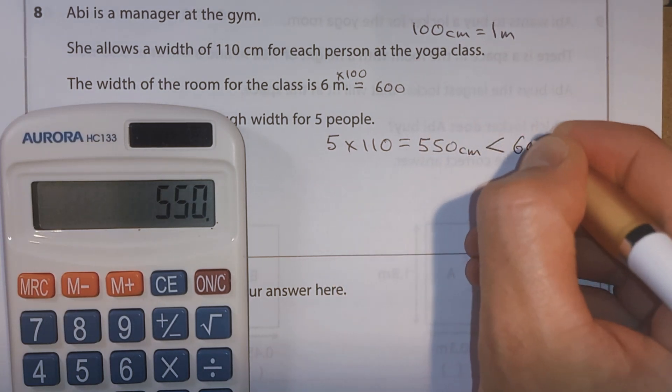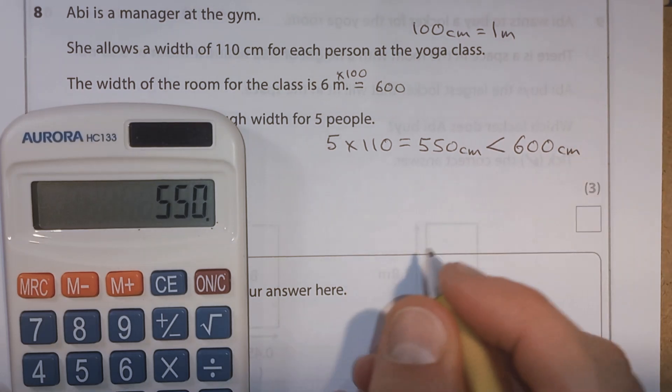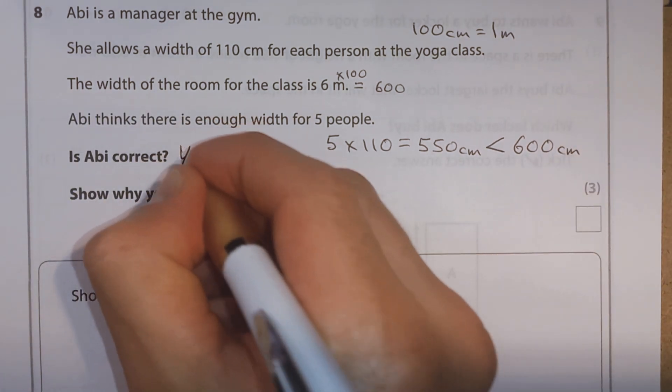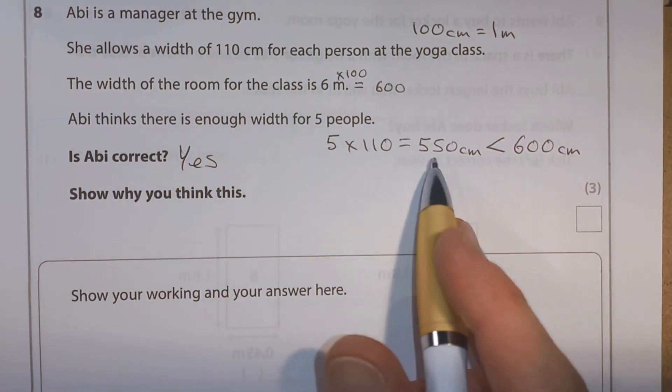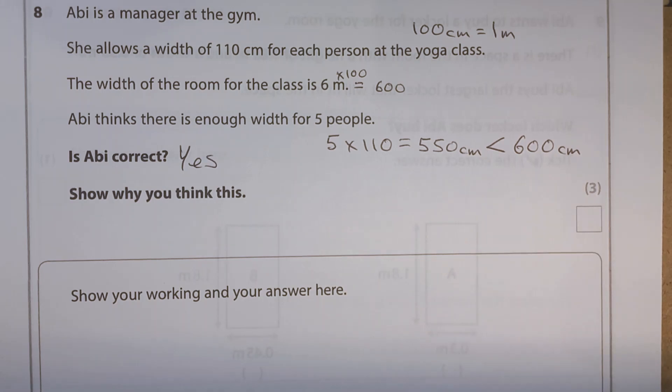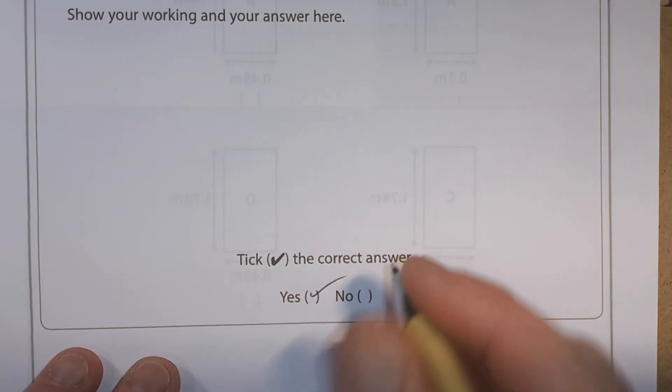For five lots of 110, we need 550 centimetres. Well, that is less than 600 centimetres. So, yes, she's correct. They will fit in and we'll still have a little bit of space left over. Make sure we remember to tick down here.